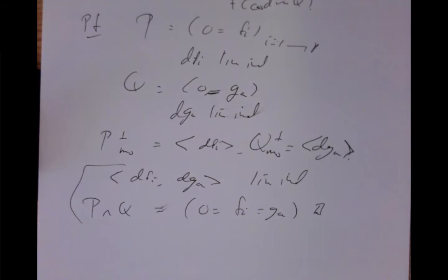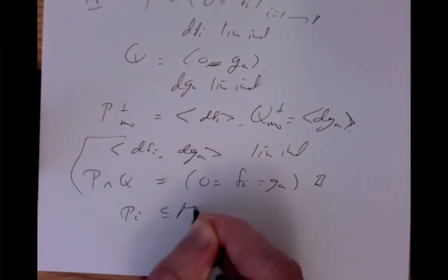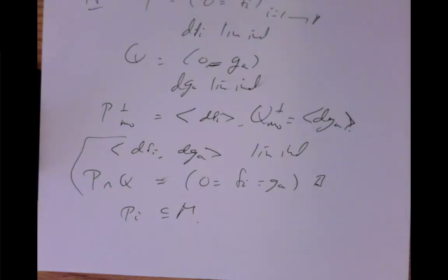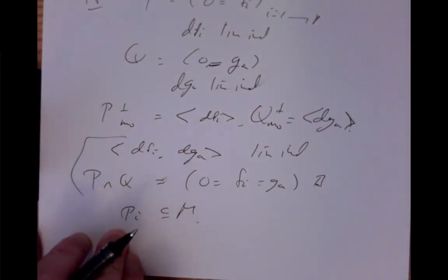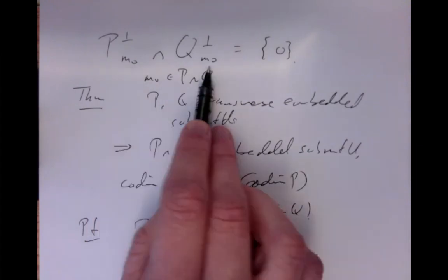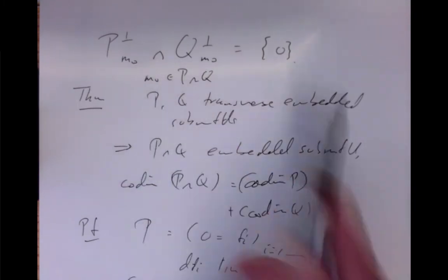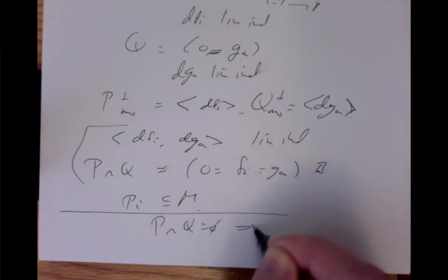We can make the obvious generalization to any finite collection of submanifolds: they are transverse if wherever they intersect, the conormal spaces of any of them intersect only at the zero cotangent vector. Note that transversality only has to be checked at intersection points, so if they don't intersect, then they are trivially transverse. P ∩ Q = ∅ implies transverse — and it's actually an important case.